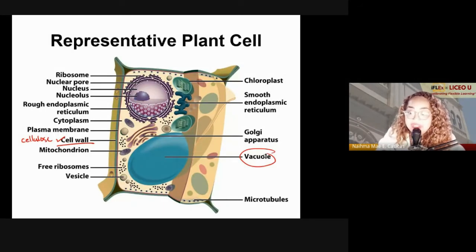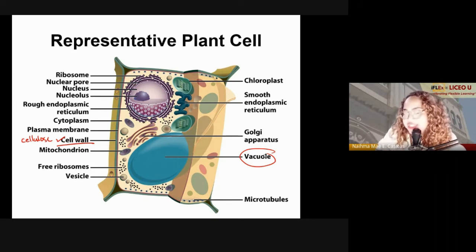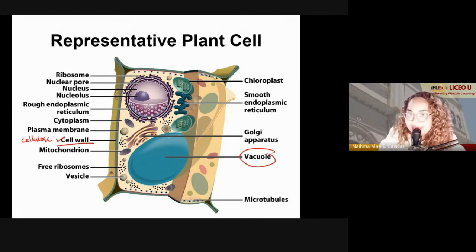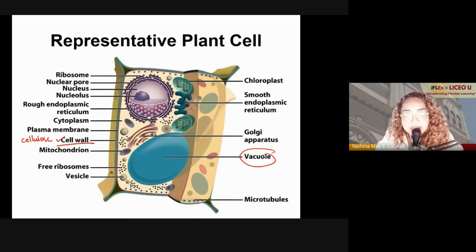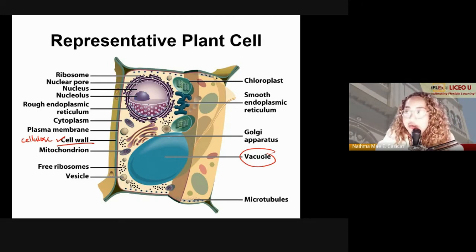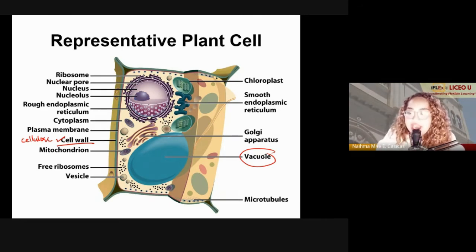Plant cells have a larger vacuole because it is used for storage. They can store wastes from different processes inside the plant cell, or use the large vacuole to store water in case there is no water supply from rain or groundwater.